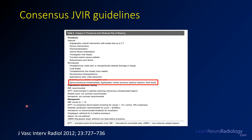The guidelines for moderate risk procedures from that article include all spinal procedures. The management recommendations include correcting an INR to 1.5 or less, correcting an APTT to 1.5 times the control, transfusing platelets for values less than 50,000, not checking a hematocrit, holding Plavix or clopidogrel for five days, not worrying about aspirin or other anti-inflammatory drugs, and withholding low molecular weight heparin or Lovenox for one dose prior to the procedure.